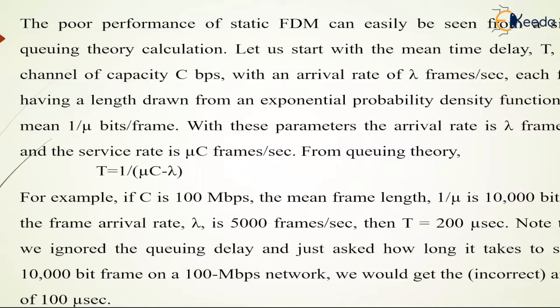For example, if C is 100 Mbps, the mean frame length 1/μ is 10,000 bits, and the frame arrival rate lambda is 5,000 frames per second, then we will get the value of T equal to 200 microseconds.